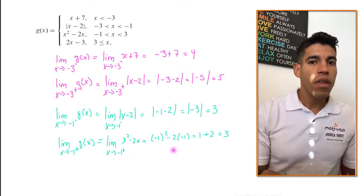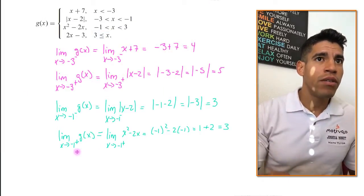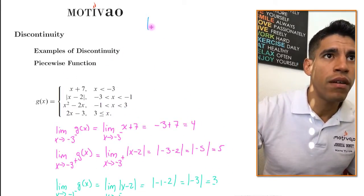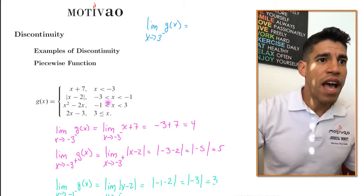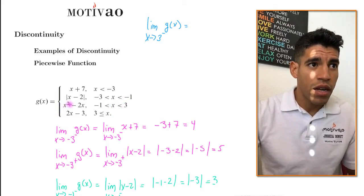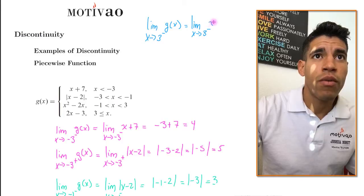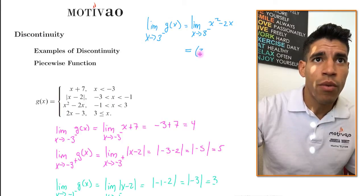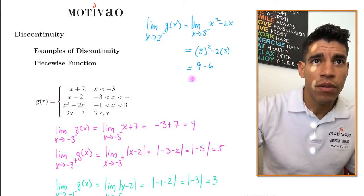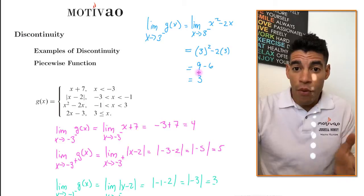Now let's do our last point at 3. The limit when x approaches 3 from the left of g of x — notice that from the left of 3 it's still x less than 3, so we use x squared minus 2x. Substituting 3: 3 squared minus 2 times 3 equals 9 minus 6, which is equal to 3. So the limit from the left of 3 is equal to 3.